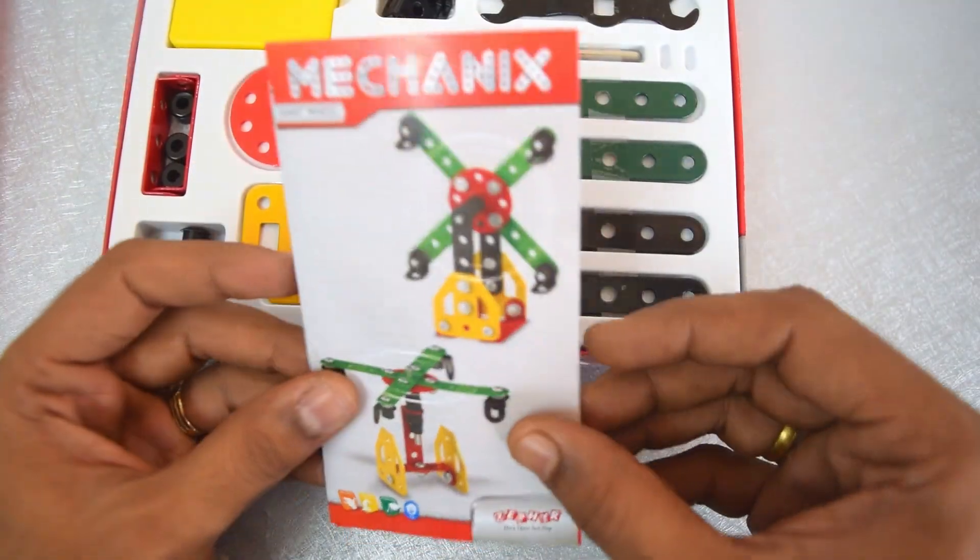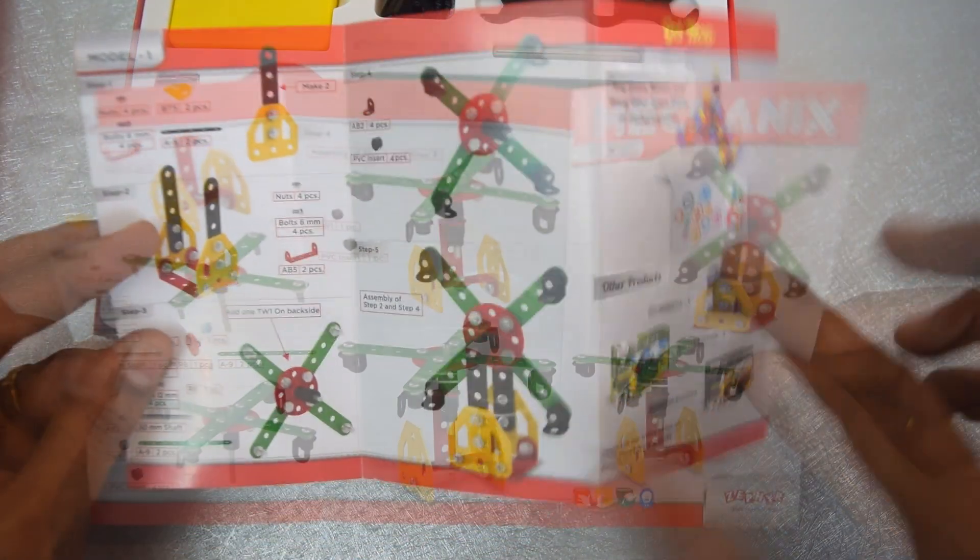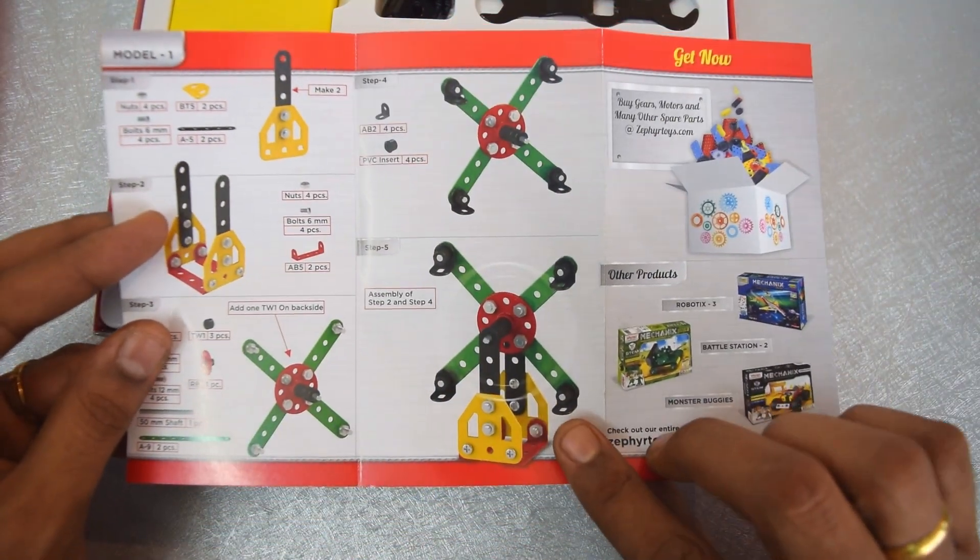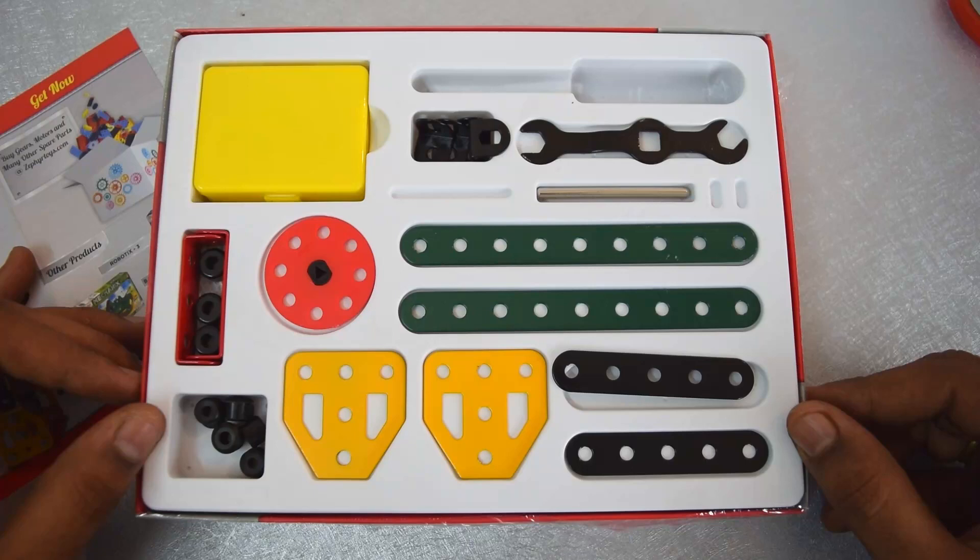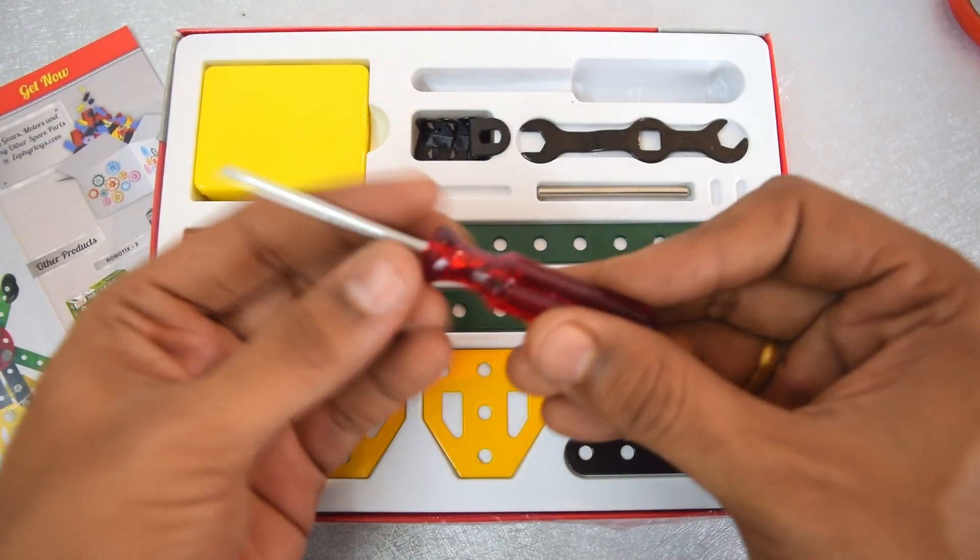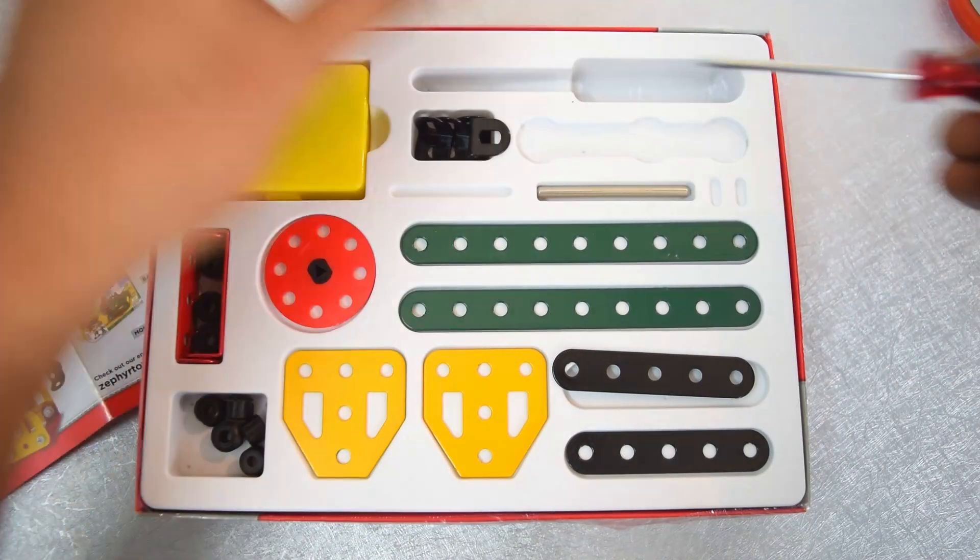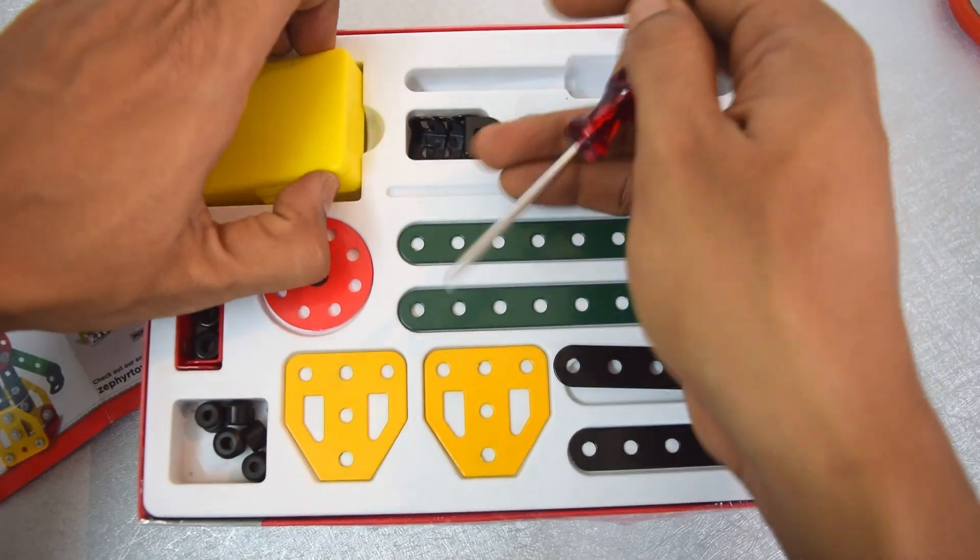Here is the manual. We'll go ahead and construct this giant wheel today. As usual with any other Mechanix kit, we'll get the tools like the screwdriver, the wrench, and the required nuts and bolts.